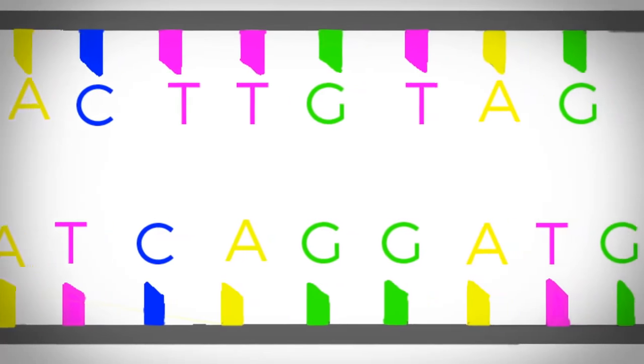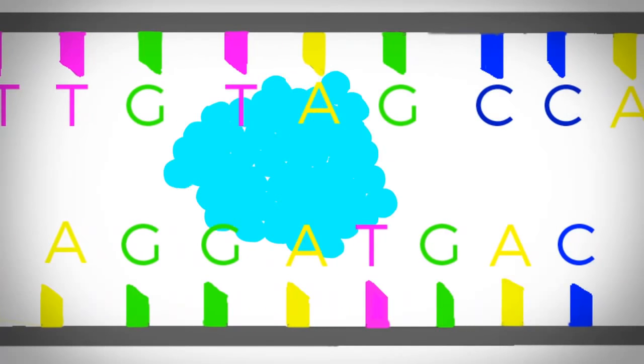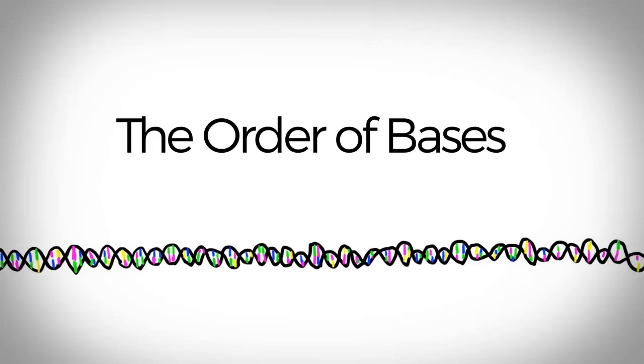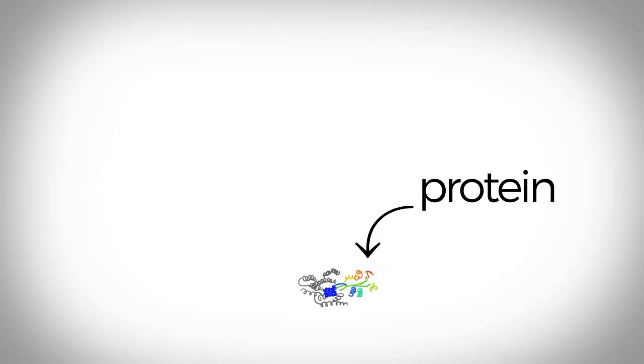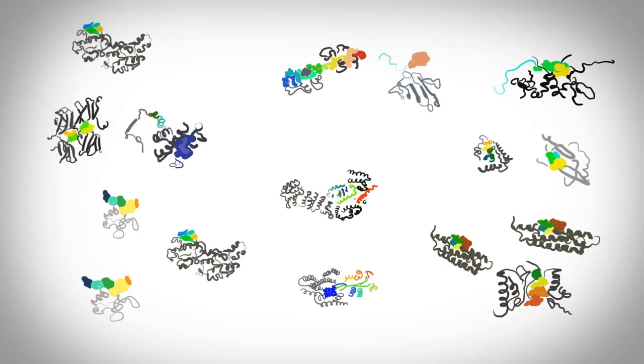Your body reads the genes and the letters like a recipe, and builds protein. The order of the bases in the DNA, along with the length and sequence of the gene, determines the size and shape of the protein it builds. The size and shape of the protein determine the function it will have in your body.